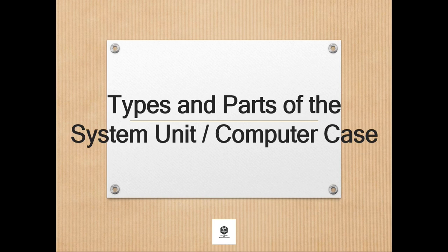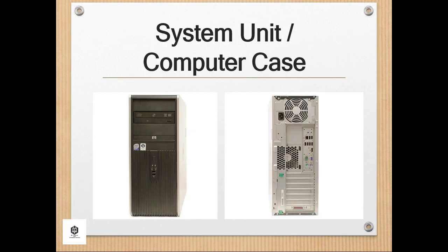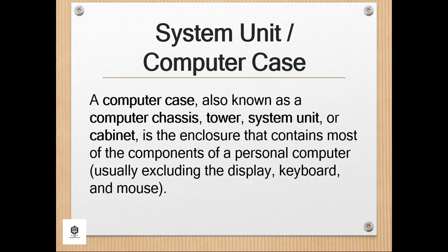Hello everyone, today we will have a new lesson about types and parts of the system unit or computer case. A computer case is also known as a computer chassis, tower, system unit, or cabinet. This is the enclosure that contains most of the components of a personal computer, usually excluding the display, keyboard, and mouse.